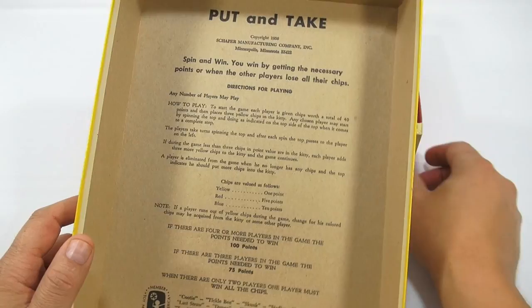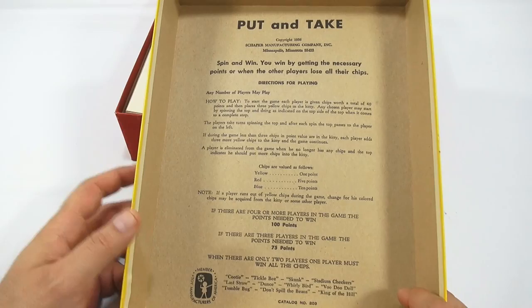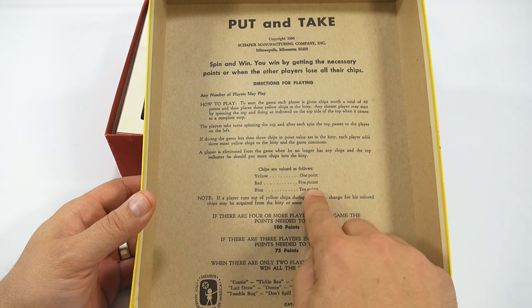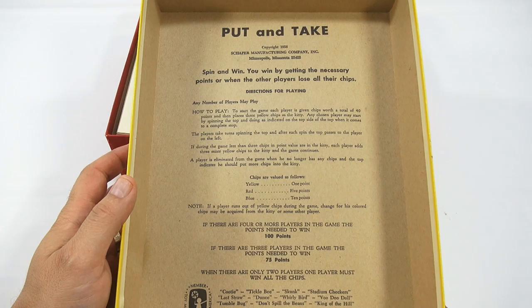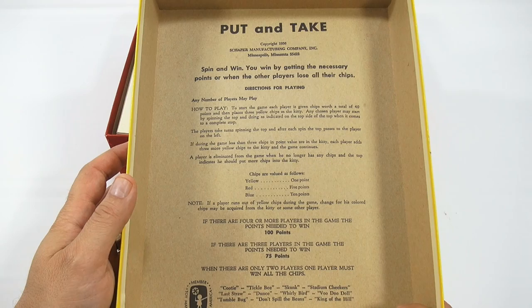Let's give that a quick look here because to be honest with you I'm struggling with this game in regards to exactly how to play it. I mean I understand how to play it, it's more the scoring. The yellow chips are worth one point, the red are worth five, and the blue are worth ten.